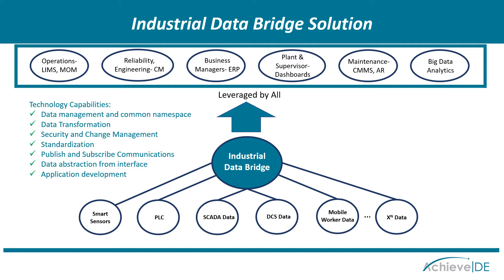Some of the capabilities of this include data management and a common namespace, where you can name information logically as it appears within the plant in a hierarchy that makes sense — for example, by machine level and also by tag level. Being able to leverage and transform that data into information that's more useful for users and applications, including the ability to do arithmetic functions on them and detect events and alarms as part of that.